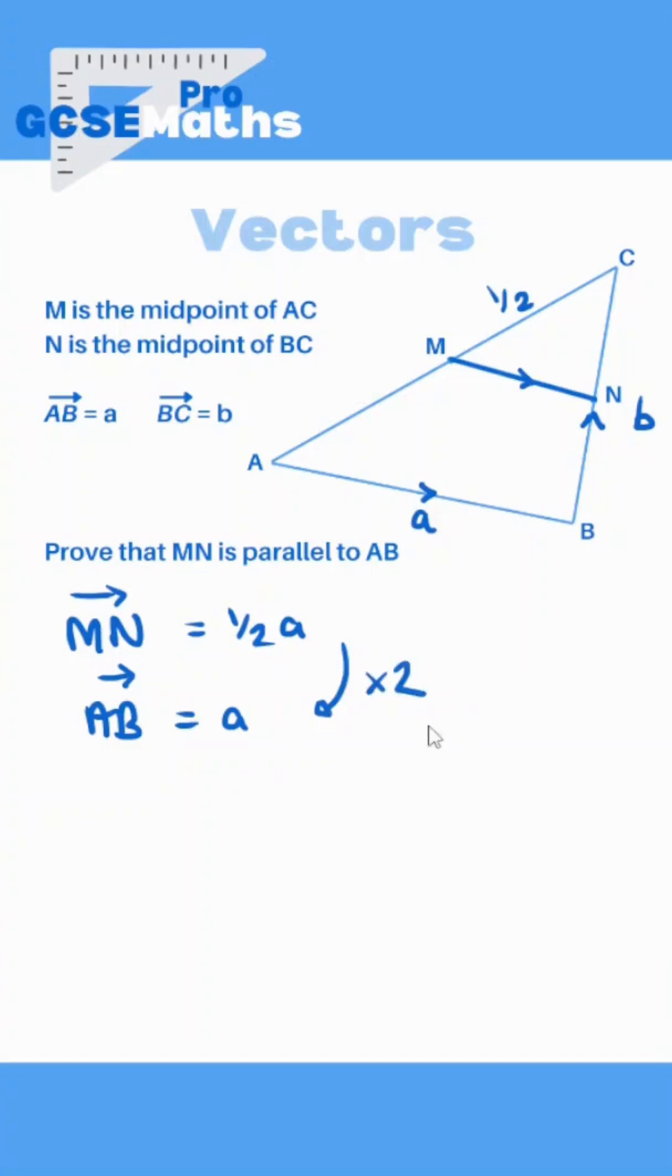Well in this case can you see how I would have to times it by two. So to prove that they are multiples I'm going to write it like this: AB equals two lots of MN. You could also write it as MN is a half AB. That's fine. This proves that they're multiples.